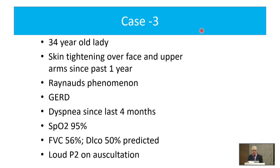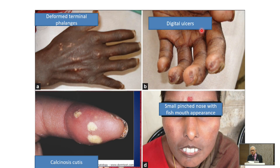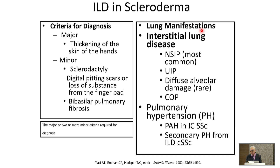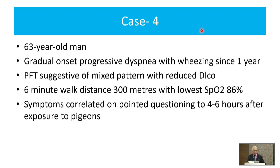Case 3 was a 34-year-old lady with classical scleroderma — digital ulcers and deformed terminal phalanges visible on examination. This is something that interests the pulmonologist as well. The CT scan showed classical fibrotic NSIP.